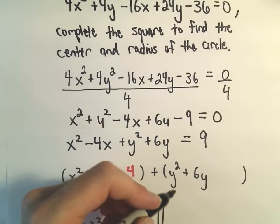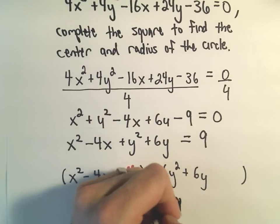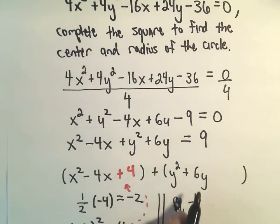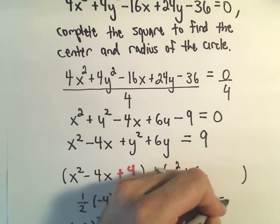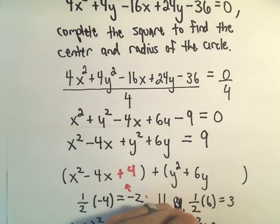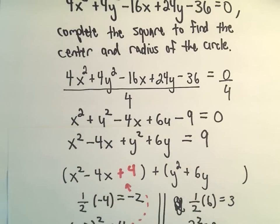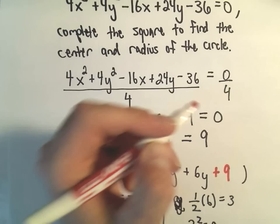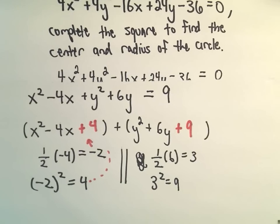The same thing for the y's, we'll have, let's see, if we take one-half of the coefficient, which is 6, that will give us positive 3, and then 3 squared is positive 9. So again, I'm going to add a 9 to the left side in that set of parentheses.